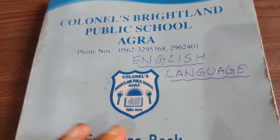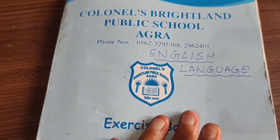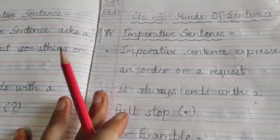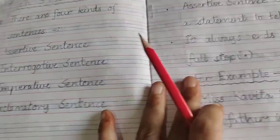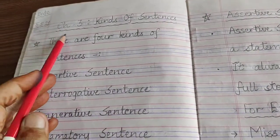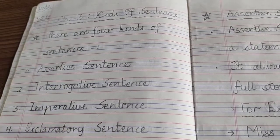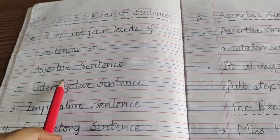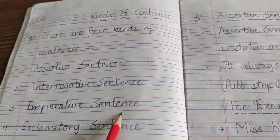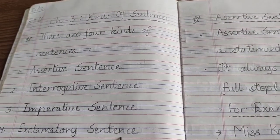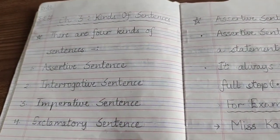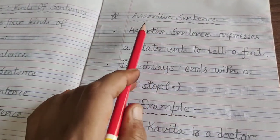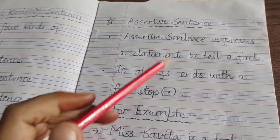For that, children, you have to take out your English language notebook and turn to a fresh new page where you will start writing. But before writing, I would like to remind you that yesterday I gave you chapter number 3 kinds of sentences. Part 1 was to write the names of all 4 kinds of sentences on the first page, and then from a new page you started writing the introduction part of all the kinds of sentences.